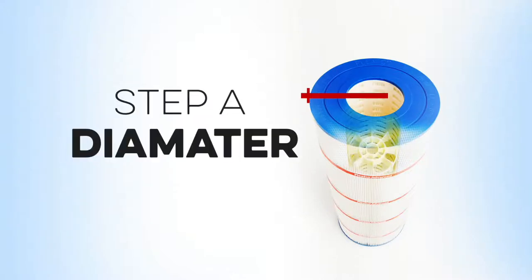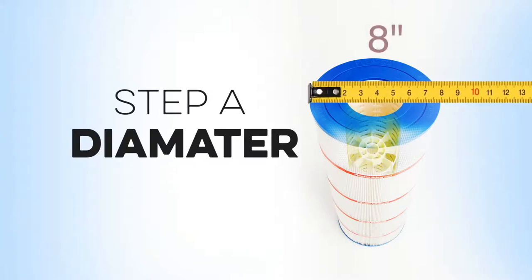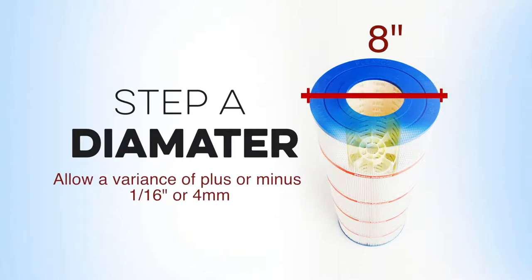Step A – Diameter. Measure the outer diameter of the cartridge. Take a ruler and measure diagonally across the filter from edge to edge.